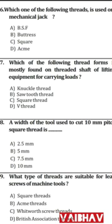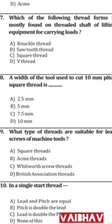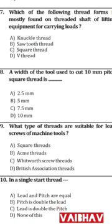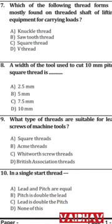Question 7: Which one of the following thread forms is mostly found on threaded shafts of lifting equipment for carrying loads? For load carrying and power transmission, the answer is C — square threads.